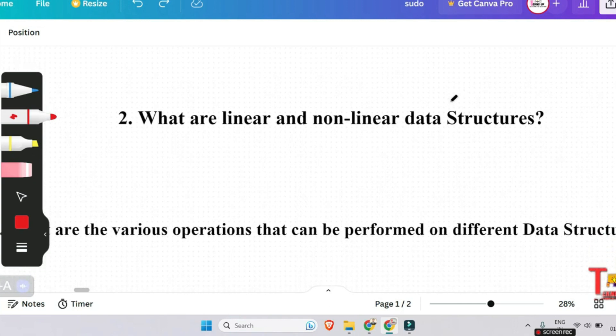And the next question is, what are linear and nonlinear data structures? A data structure is said to be linear if its elements form a sequence of a linear list. Examples: array, linked list, stacks and queues. A data structure is said to be nonlinear if the traversal of nodes is nonlinear in nature. Examples: graph and trees.